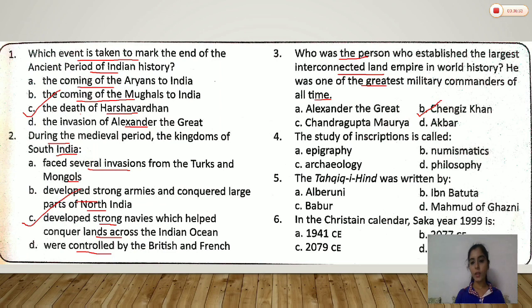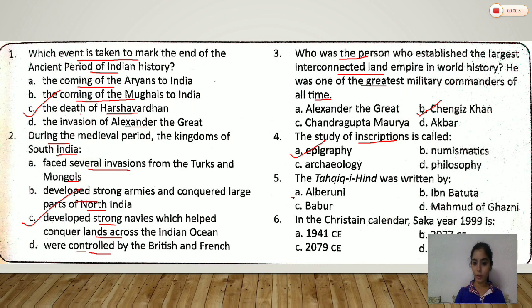The Tahikihind was written by Albirni. So, the correct option is A — Albirni.